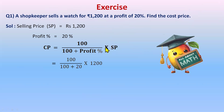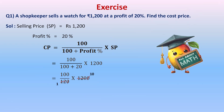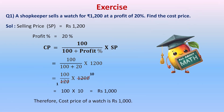Putting in the values: Cost Price = (100 / (100 + 20)) × 1200 = (100 / 120) × 1200. We do the addition first: 100 + 20 = 120. Then cancel the zeros — 1200 divided by 120 gives 10, and 100 × 10 = ₹1,000. So the cost price of the watch is ₹1,000.